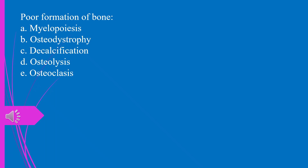Question 22. Poor formation of bone: a) myelopoiesis, b) osteodystrophy, c) decalcification, d) osteolysis, e) osteoclysis. The answer is b, osteodystrophy.